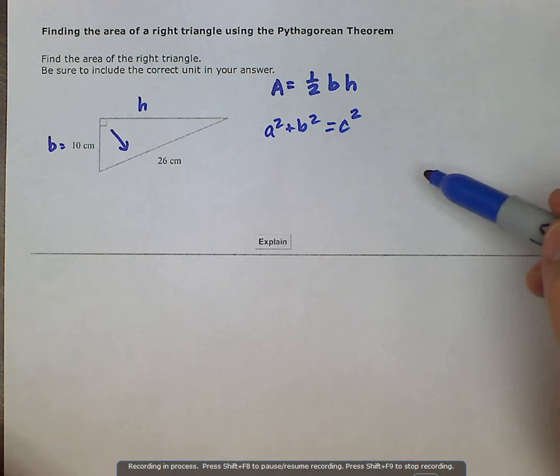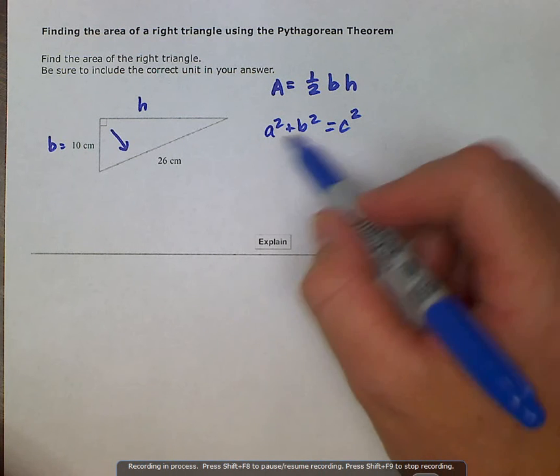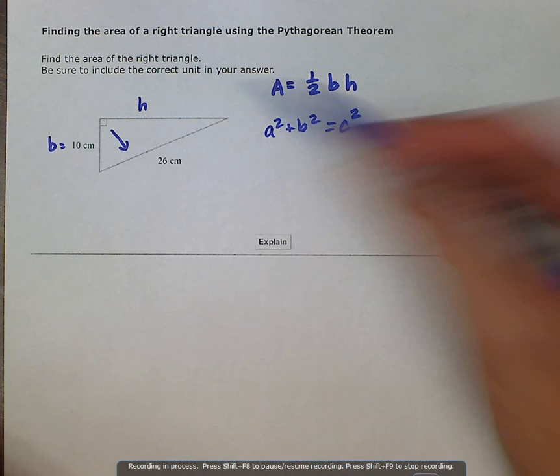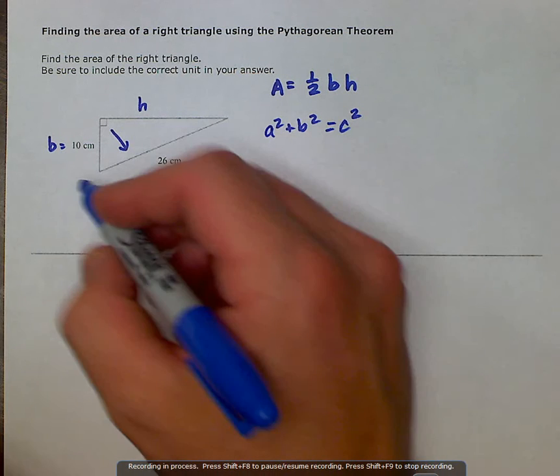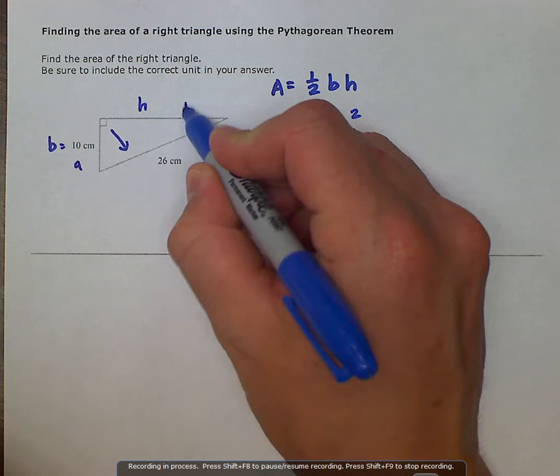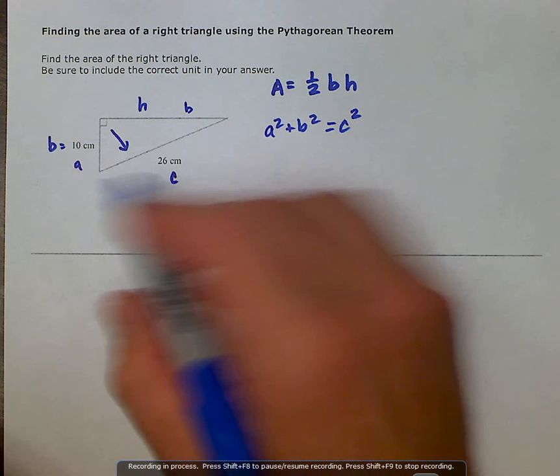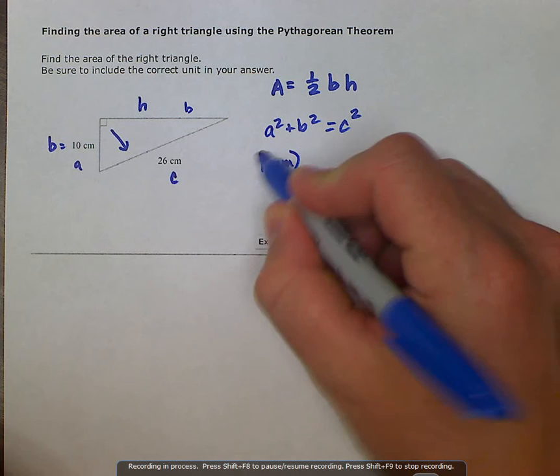So let's go ahead and do this first. So we have a squared, so we have 10 centimeters, which is our a squared and our b squared. We can label this b for our base or height. We could also call this a, b, and c in terms of our Pythagorean Theorem. So let's go ahead and put our 10 centimeters, and we're going to square that.